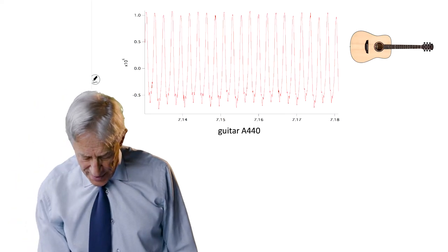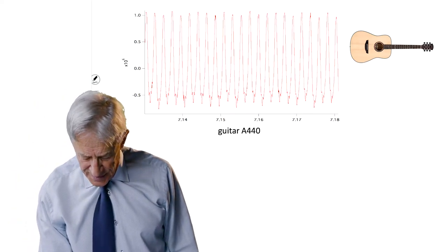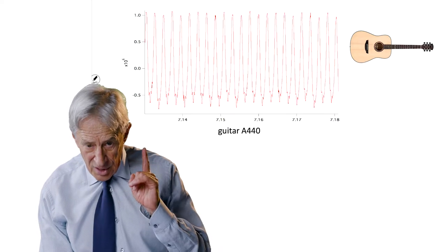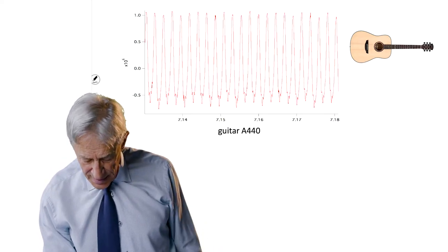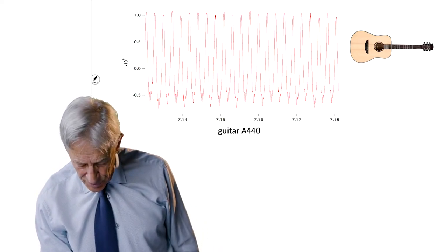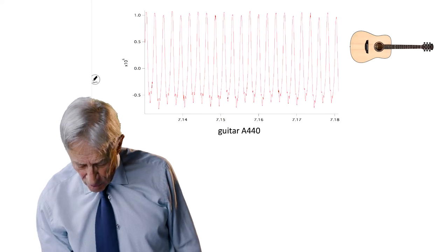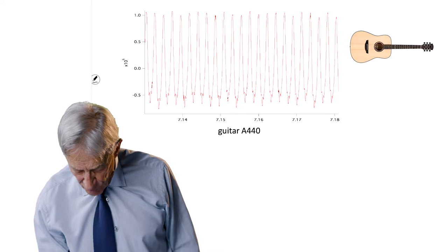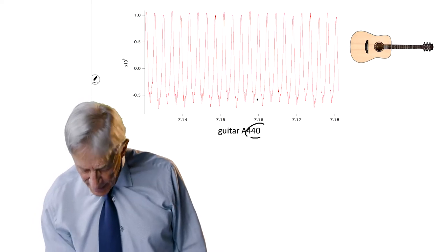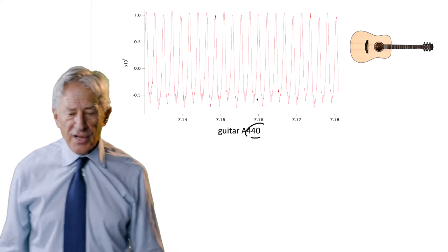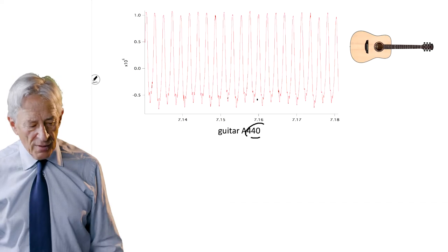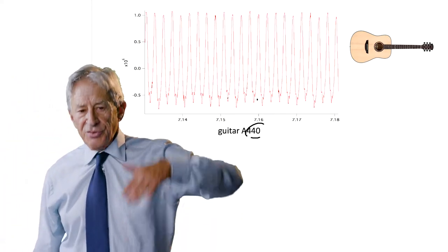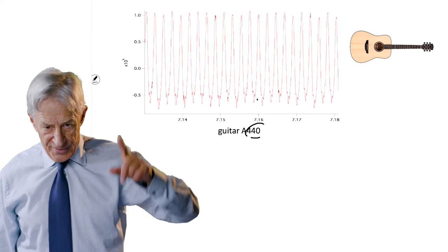From 7.15 to 7.16 seconds — that's a hundredth of a second — we have 4 and change oscillations. That's exactly the 440 cycles per second. The guitar issues this periodic signal.